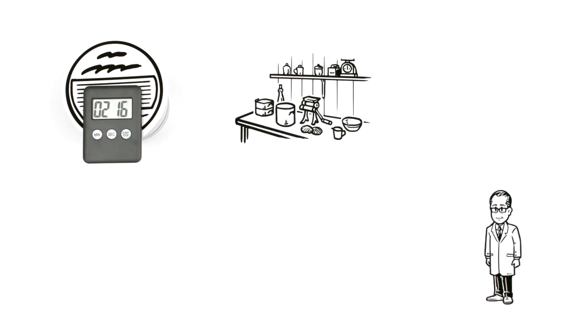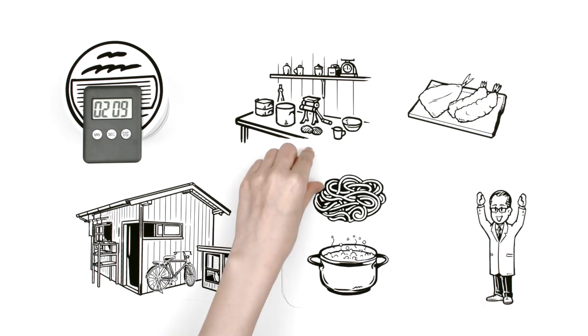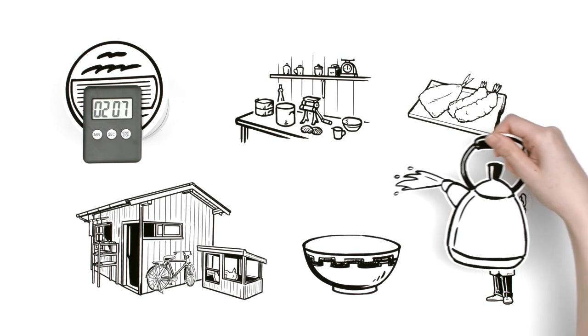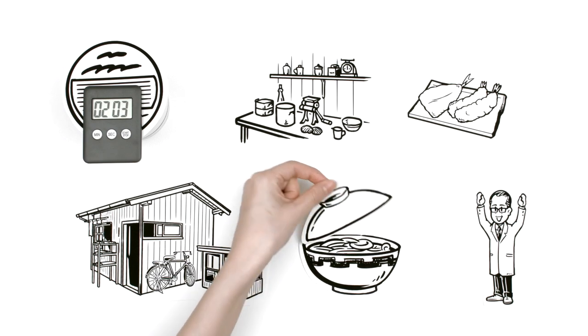He conducted many experiments in his garden shed. Inspired by tempura, he eventually developed a method for frying noodles in hot oil. Put these noodles in a bowl, simply add hot water, and they're ready to eat. This was the first instant ramen.